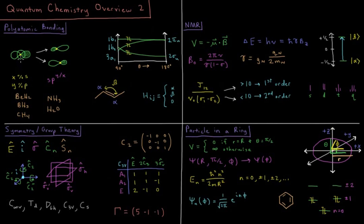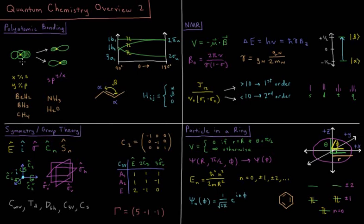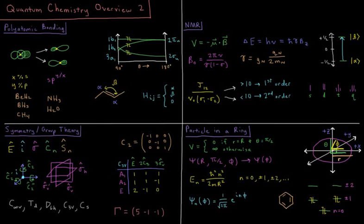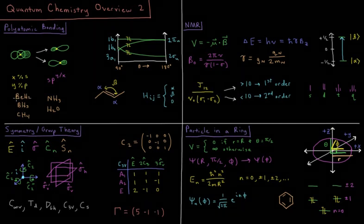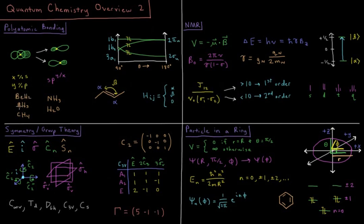We discuss things like hybridization, how we take the valence orbitals of a given central atom and mix them together such that they point towards our external atoms in molecules like BeH2, borane, methane, and then including things with lone pairs like ammonia and water.